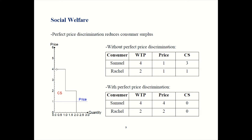You can see that on the graph — Samuel's willingness to pay is up here at $4, which traces out part of the demand curve, and what he actually paid is down here at $1. That gap is Samuel's consumer surplus. Rachel is willing to pay $2 for the good, so that part of the curve is flat at $2. She pays a price of $1, meaning her consumer surplus is 2 minus 1, which is $1. The gap between what she's willing to pay and what she actually pays is her consumer surplus. So when there's no price discrimination, this L-shaped region is all consumer surplus, totaling $4 — 3 plus 1.